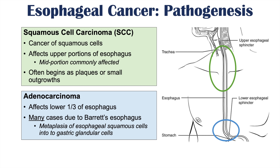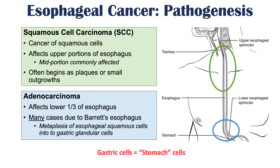Adenocarcinoma affects more often the lower third of the esophagus. Many cases are caused by Barrett's esophagus, where there is a metaplastic change of esophageal squamous cells in the lower area of the esophagus, usually just above the lower esophageal sphincter — the sphincter that prevents acidic gastric contents from refluxing up into the esophagus.